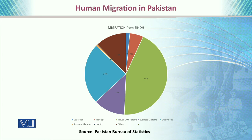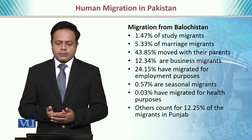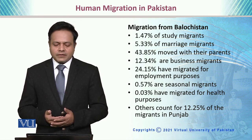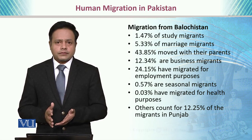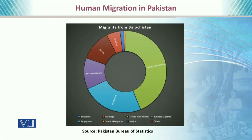24% of people are migrating for education purposes. Migration from Balochistan: 1.47% are study migrants, 5% are marriage migrants, 12% for business purposes, and 24% for employment purposes. Here you will see the reflection of the division of migrants migrating for different purposes — the majority, just like other provinces, are permanent settlers moving with their parents.